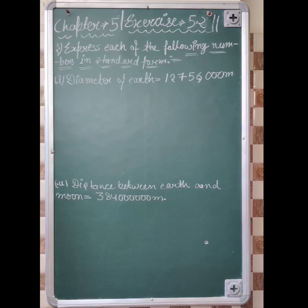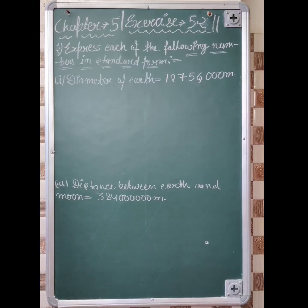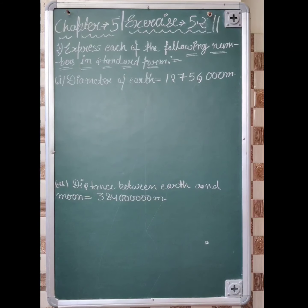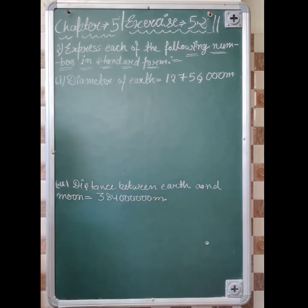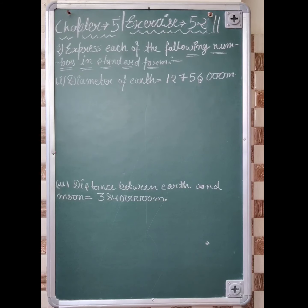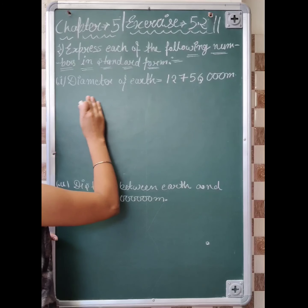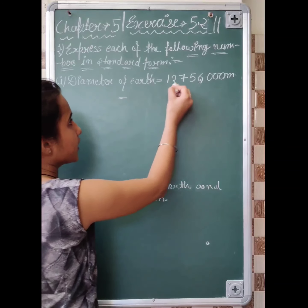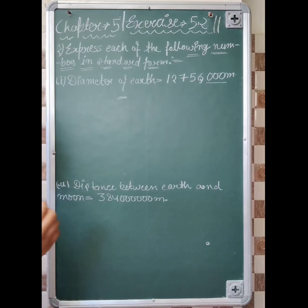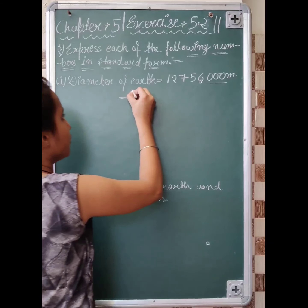You have to change it in standard form. This is the diameter of Earth. You have given the diameter of Earth, you have to focus only on the number. This is the usual form, this is the standard form. The simple method is the first process is to separate.